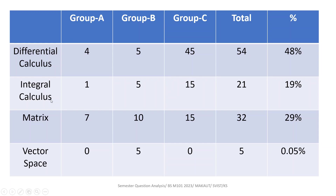Summing up across all groups: from differential calculus, total marks appeared are 54; from integral calculus, total marks are 21; from matrix, total marks are 32; and from vector space, total marks are 5. This gives approximately 48% from differential calculus, 19% from integral calculus, 29% from matrix, and 5% from vector space of the total marks in the question paper.